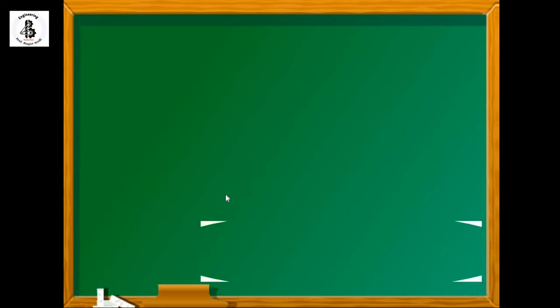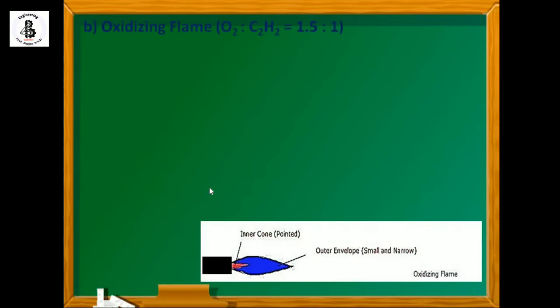Now we will discuss oxidizing flame. In the oxidizing flame, just you can see oxygen and acetylene will be 1.5 to 1. Into the oxidizing flame, the proportion of oxygen will be on the higher side, or you can say enrichment by oxygen with acetylene. As shown from the figure, it will also be making two zones: the inner zone which will be more pointed and the outer envelope which will be small and narrow.